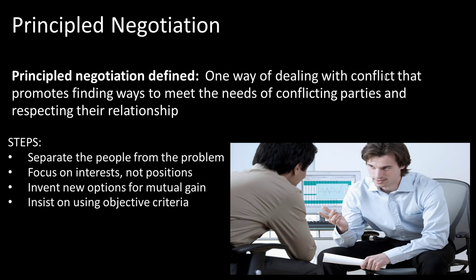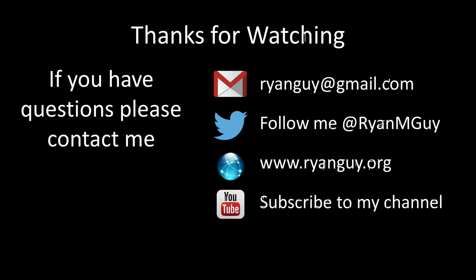Another technique is principled negotiation, which is a way of dealing with conflict more focused on finding ways to meet the needs of conflicting parties while still respecting the interpersonal relationships between individuals. This systematic method involves separating people from the problem, focusing on interests rather than positions, finding new alternatives that mutually benefit everyone, and using objective criteria. It's a bit less structured but can be very useful for better dealing with and understanding conflict.